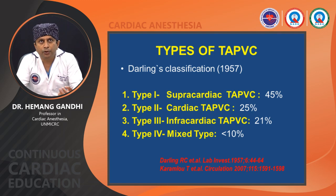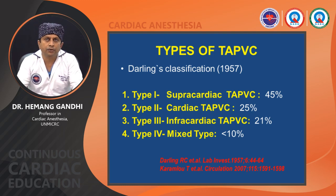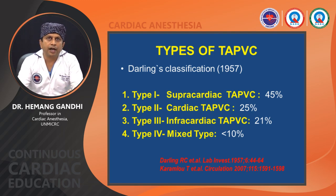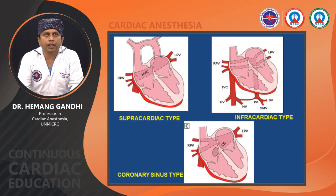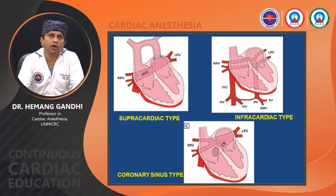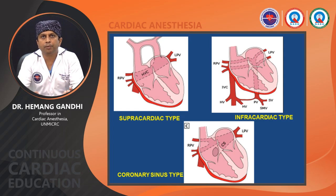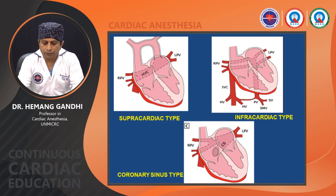According to the classification described by Darling in 1957, there are four types of TAPVC. Type 1 is supracardiac TAPVC, accounting for 45% of total cases — the most common. Type 2 is cardiac TAPVC at 25%. Type 3 is infracardiac TAPVC at 21%, and Type 4 is mixed TAPVC at less than 10%. In supracardiac type, pulmonary veins drain into the innominate vein or SVC. In infracardiac type, they drain into the IVC, hepatic veins, or portal venous system. In the coronary sinus type, they drain into the coronary sinus or right atrium.